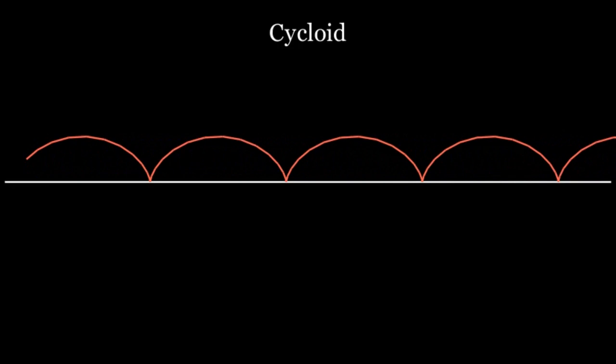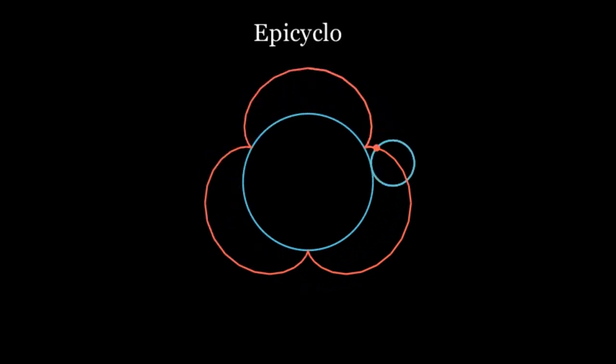Let's consider what would happen if, instead of rolling the ball along a flat table, we rolled it around a larger ball. Like before, we will track the position of a single point on the small ball as it rolls around the circumference of the larger ball. The curve that is created is a flower-like pattern known as an epicycloid.